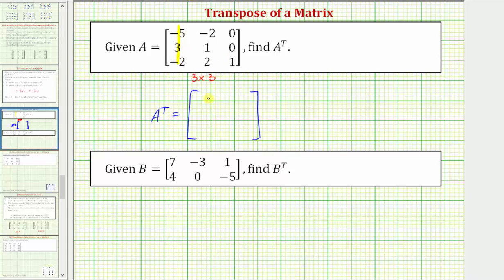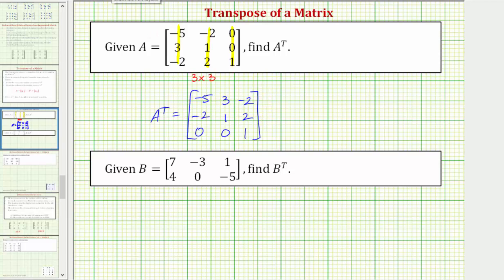So this first column will be the first row in A transpose. So the first row is going to be negative five, three, negative two. The second column of matrix A will be the second row of A transpose, so we have negative two, one, two. And finally the third column of matrix A will be the third row of A transpose, so we have zero, zero, one. Here is the matrix A transpose. Notice how matrix A does not equal A transpose and therefore A is not a symmetric matrix.